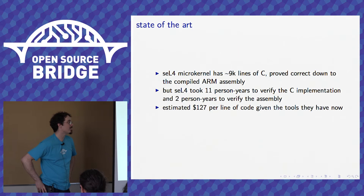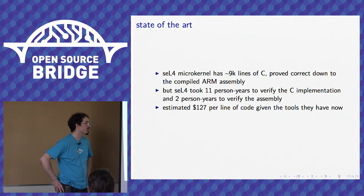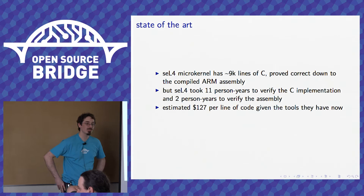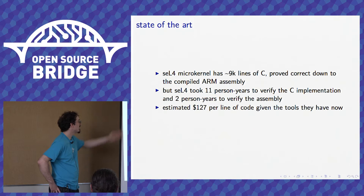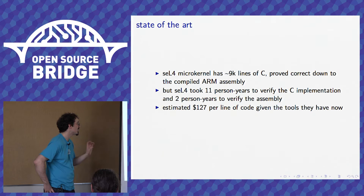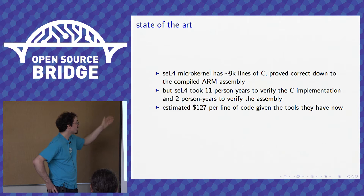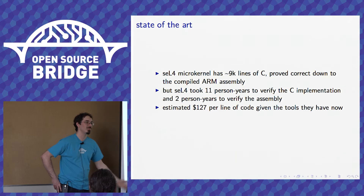Here's the state of the art in full-on formal verification of software. Our partners at NICTA in Australia have a microkernel called SEL4 — about 9,000 lines of C code implementing a very small operating system. They've proved it correct all the way down to the compiled ARM assembly, which is a fantastic result. You can run this on the hardware it supports and have really strong guarantees about exactly what it will do and won't do. But it took them 11 person-years to verify the C implementation matched their formal specification, and then another two person-years verifying the generated assembly. You don't care if your compiler has bugs — but that's years and years of effort to verify 9,000 lines of source code. Compare it to the Linux kernel at 15 million lines: there's just no way.